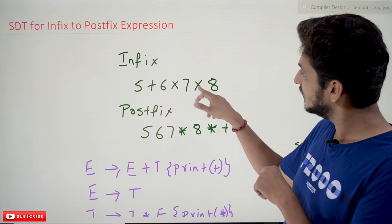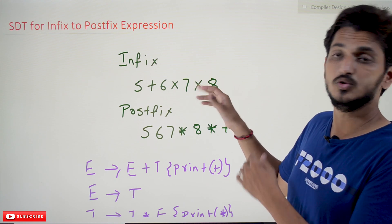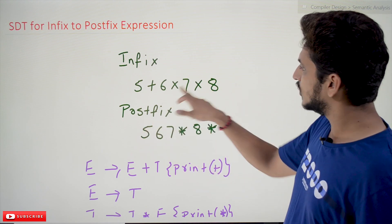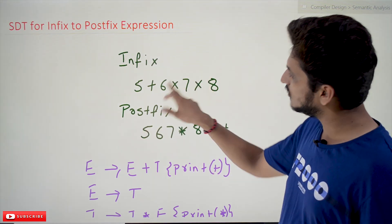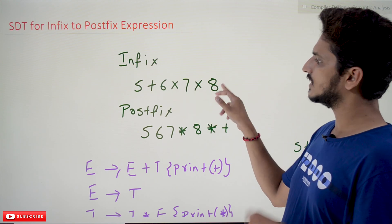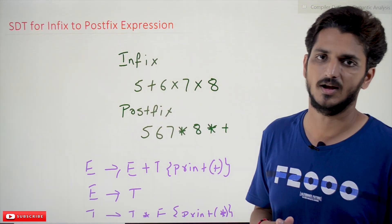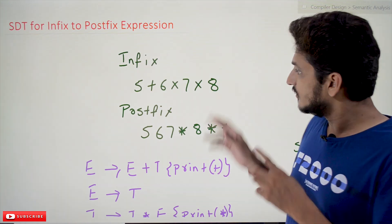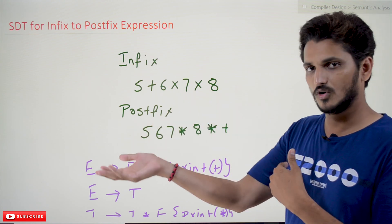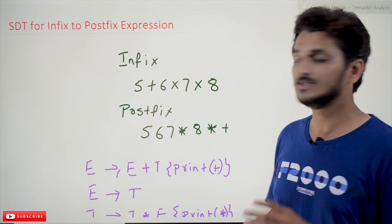When you go to evaluate 6 multiplied by 7, you have to check the next operator to see if it has higher precedence. Here we have 7 multiplied by 8 — both are having the same precedence, so you come back and do 6 multiplied by 7 first. The output is then multiplied by 8, and then you come back and add it with 5. You have to go forward, come back, and do multiple checks — that's why infix expression evaluation is not efficient.